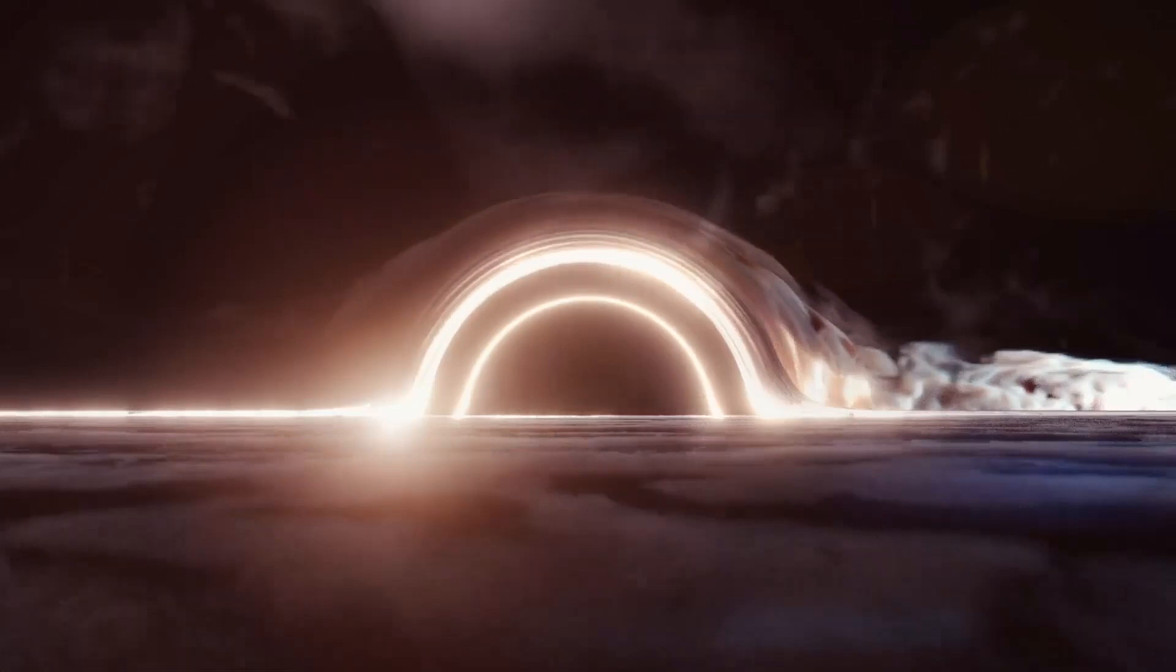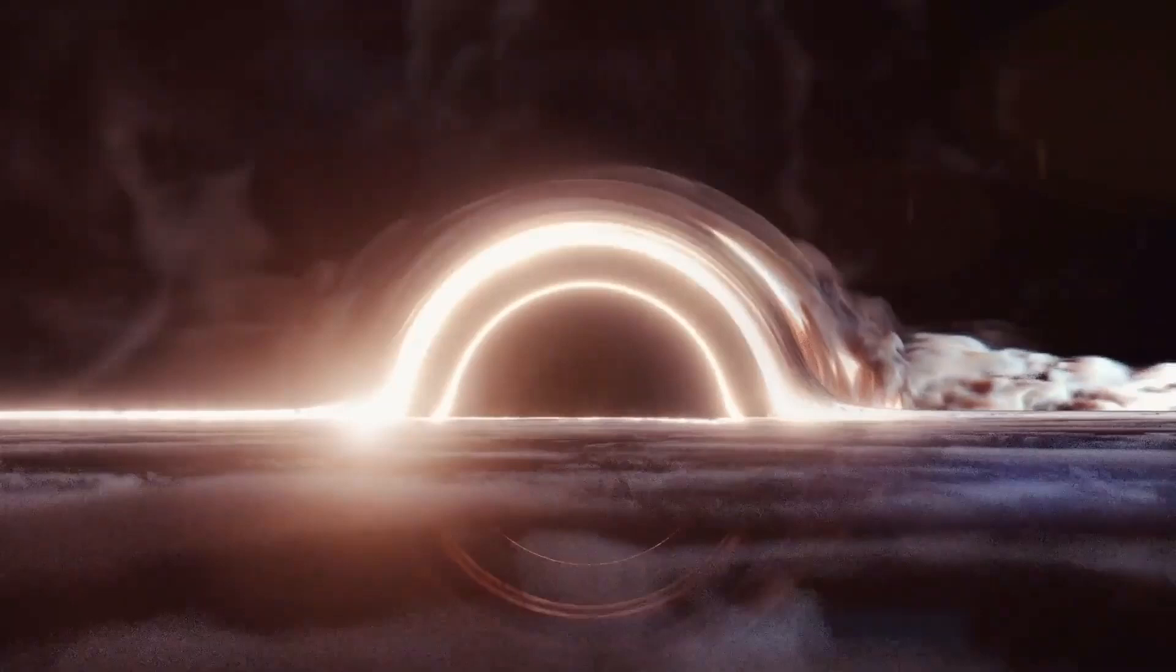Since black holes are dark, they are found when they orbit a normal star. The properties of the normal star allow astronomers to infer the properties of its dark companion, a black hole. Black holes are tombs of matter. Nothing can escape them, not even light.